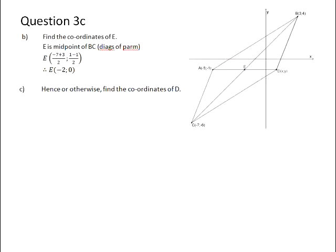Question 3, we're going to specifically look at question 3c. Before we do that, though, we're going to need the answer to 3b, which was the midpoint of BC, which was E to be negative 2 and 0. And the question said, hence or otherwise, find the coordinates of D.